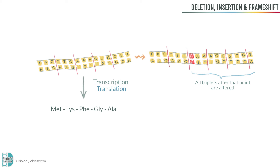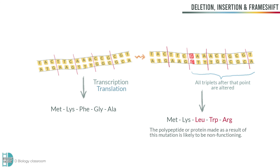Therefore, all the amino acids from the second one onwards are now incorrect. The polypeptide or protein made as a result of this mutation is likely to be non-functioning, as the change is pretty drastic.